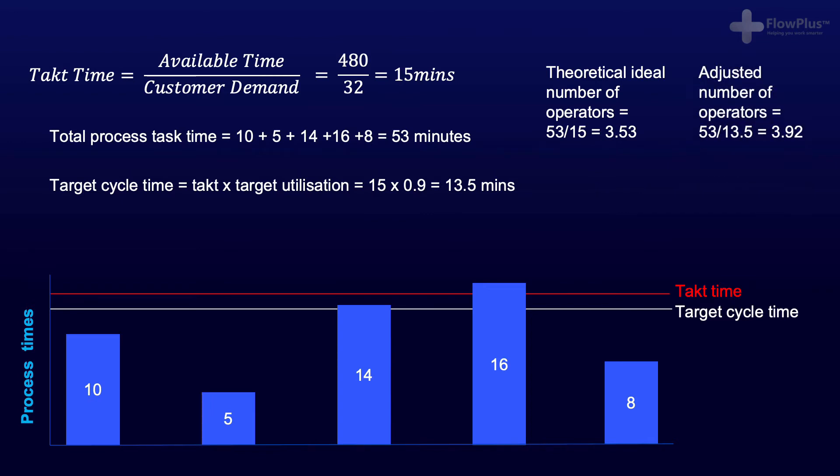Calculating the number of operators for this new target cycle time provides an adjusted number of operators value. This adjusted number of operators is what we will be using going forward. It is important, however, to clearly show the theoretical number of operators to make sure that this adjusted number shows that it has inbuilt slack.